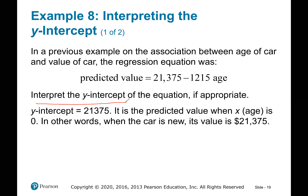Example 8: interpreting the y-intercept. In the previous example on the association between age of a car and value of a car, the regression equation was: predicted value = 21,375 − 1,215h. The y-intercept 21,375 is the predicted value when h equals zero — in other words, when the car is brand new, its value is $21,375.